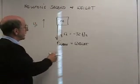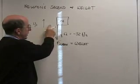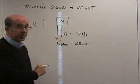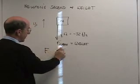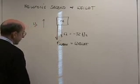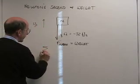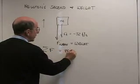If I have an object that has a force of gravity acting upon it, it has a mass m and it has an acceleration of minus 32 feet per second, I can write that the sum of all the forces acting upon this object is equal to its mass times its acceleration.